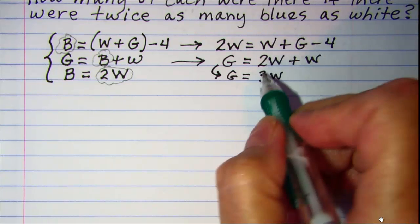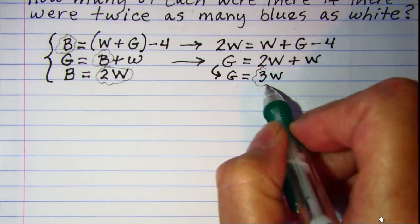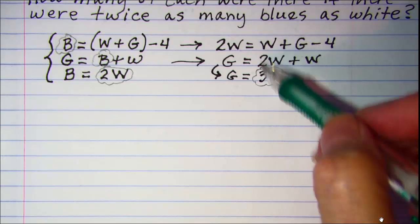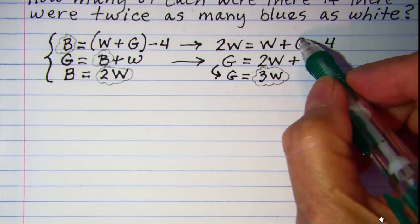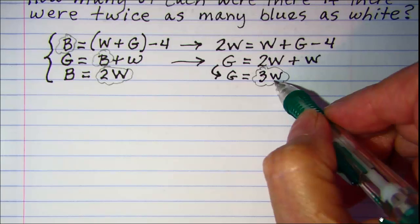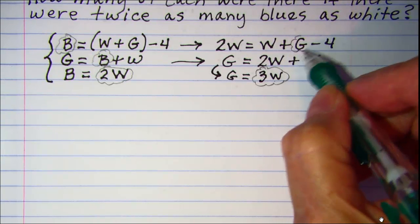And now let's substitute 3W into this equation where I see the G, because G is equal to 3W. So I'll put it in right here.